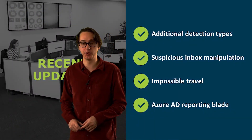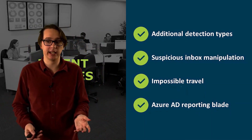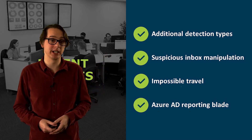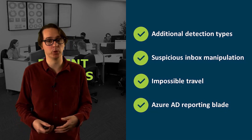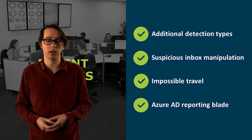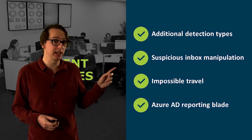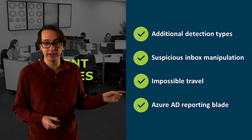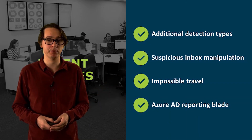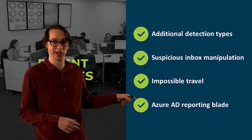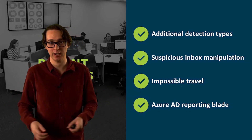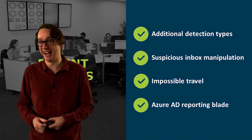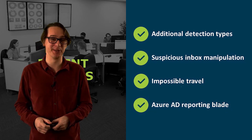Quickly going through some recent updates: with risky sign-ins, there will always be additional detection methods, as well as additional applications and options you can put into your conditional access. They have suspicious inbox manipulation in preview, which should be coming out soon. Impossible travel is also in preview — it will determine whether it's impossible for someone to go from one location to another and sign in at that same location. And there are some recent updates with the reporting blade as well.